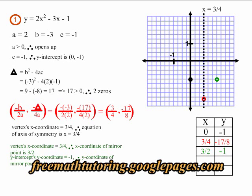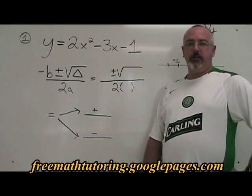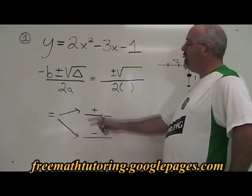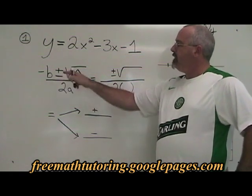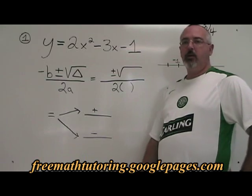In example one, we have two zeros and we are going to use the quadratic formula to find them. To find the x-intercepts of our parabola, we are using the formula negative b plus or minus the square root of delta over 2a. This is our quadratic formula.